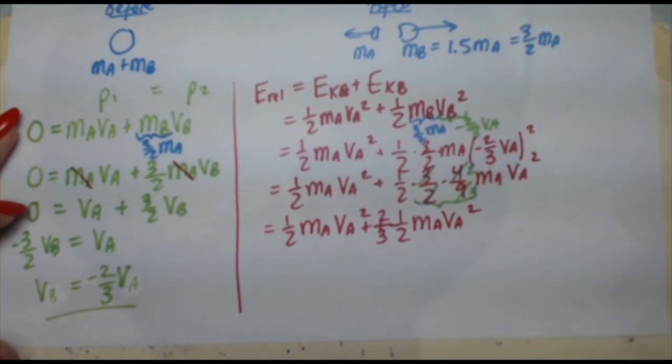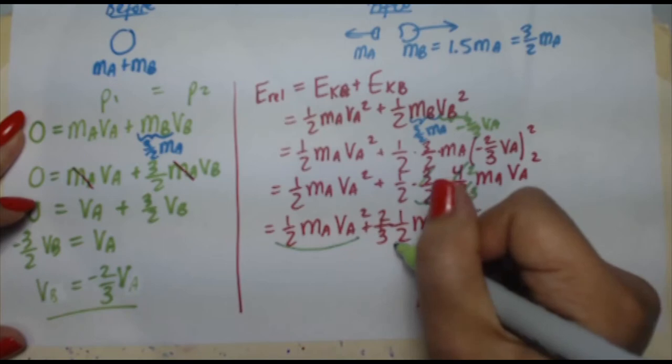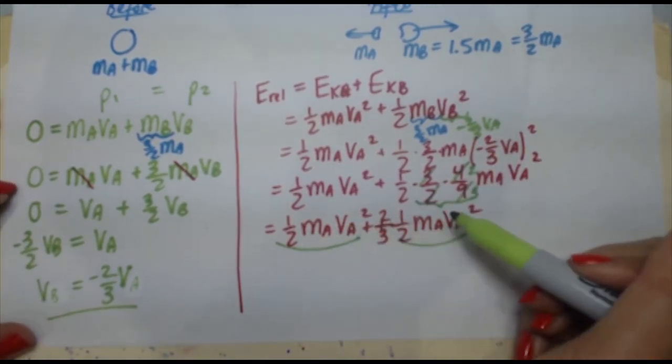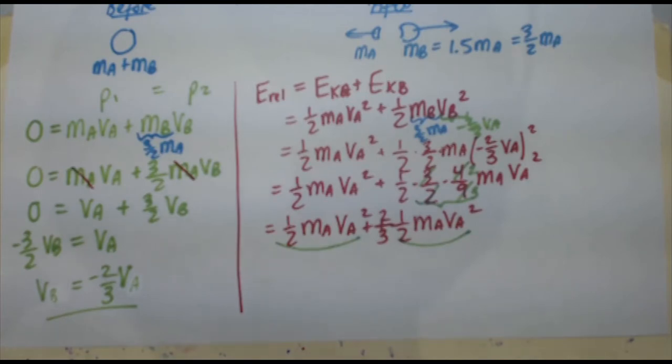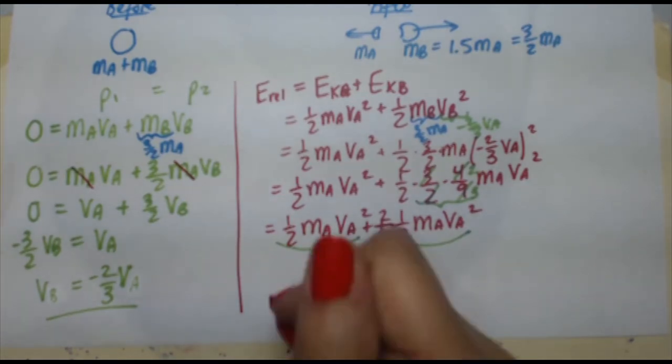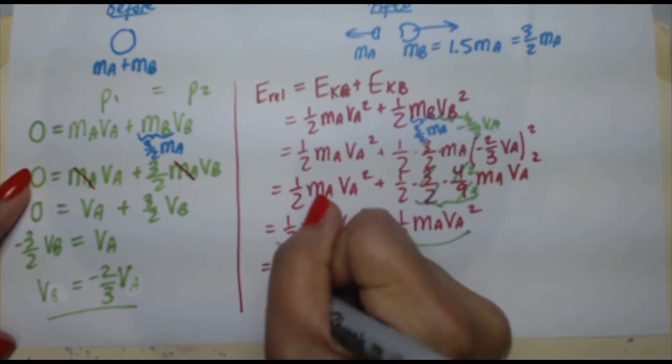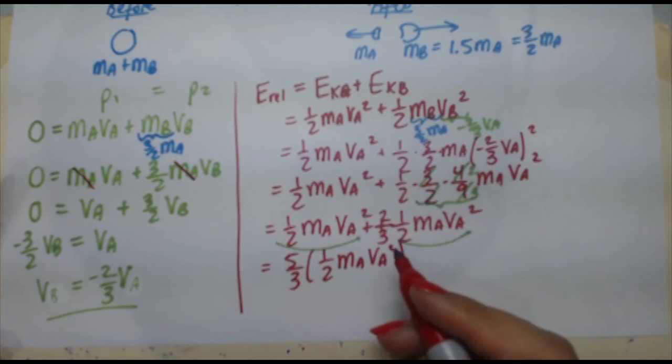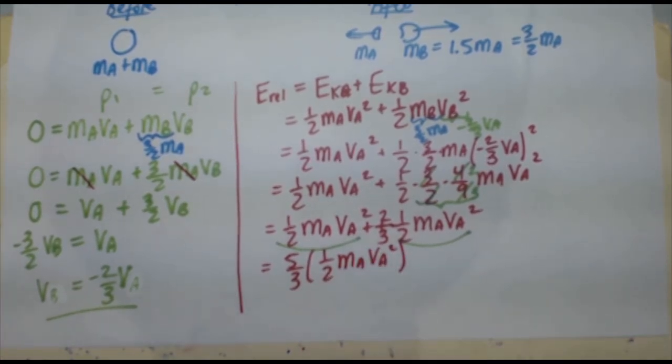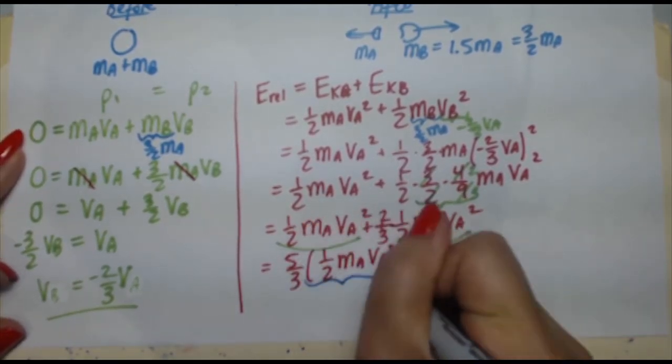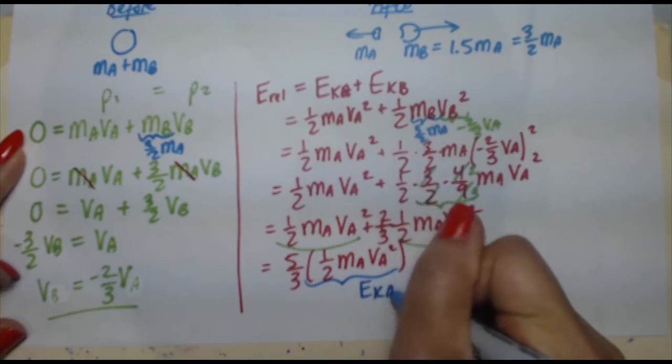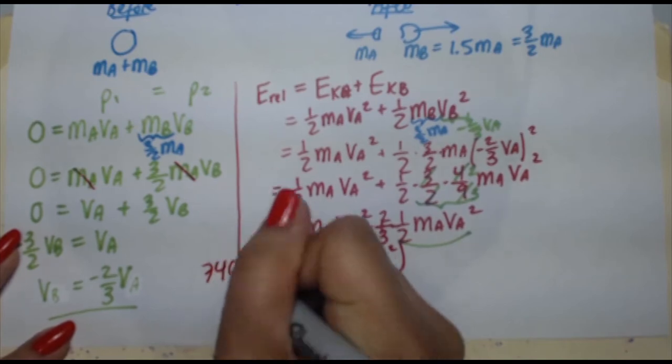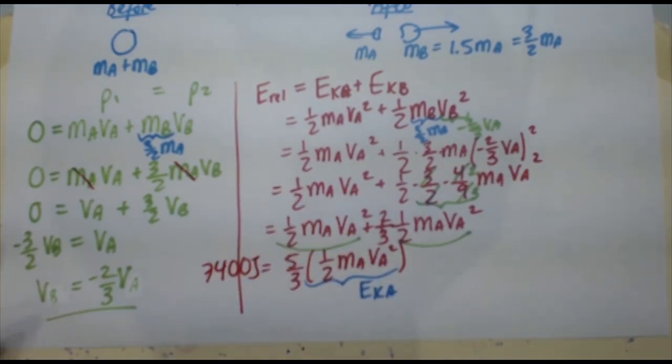So the reason I did that is because you've got 1 half mA vA squared here, 1 half mA vA squared there. So assume it's x plus 2 thirds x. So 1 plus 2 thirds is 5 thirds. So pretty much you're getting 5 thirds, 1 half mA vA squared. And what is this really? This is the expression for kinetic energy of A. And we know that that's equal to the energy released, 7,400 joules equals 5 thirds EKA.